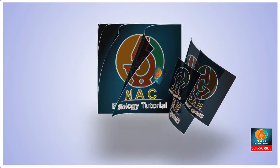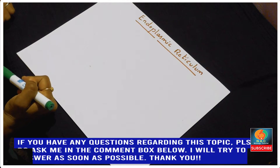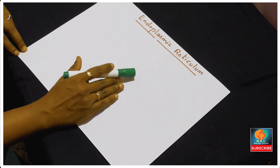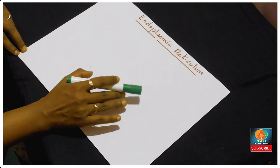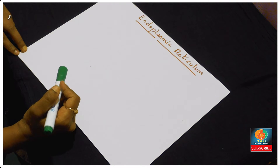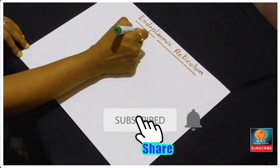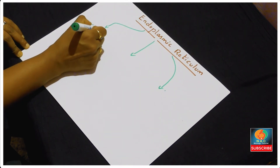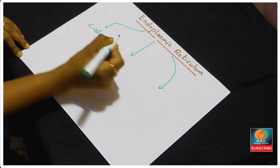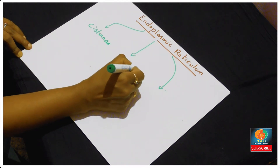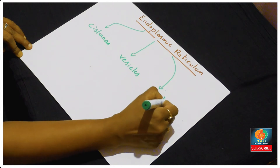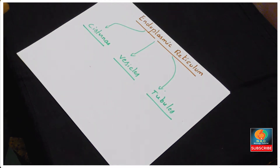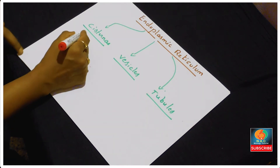Welcome back students. The endoplasmic reticulum is the most important organelle; it is present abundantly in the cell. The endoplasmic reticulum consists of three main elements: the first is cisternae, the second is vesicles, and the third is tubules.